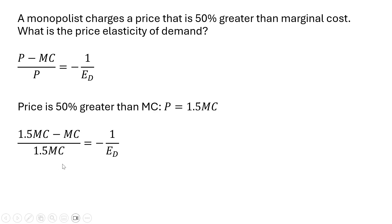And now we're going to simplify the left-hand side. 1.5 MC minus 1 MC is just 0.5 MC. So the numerator here simplifies to 0.5 MC.